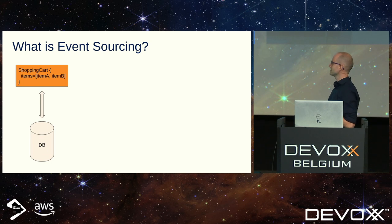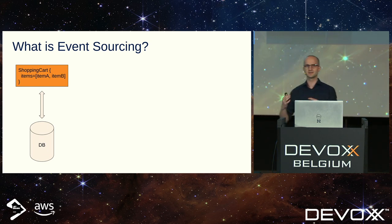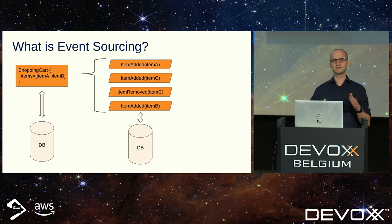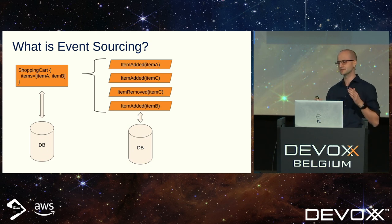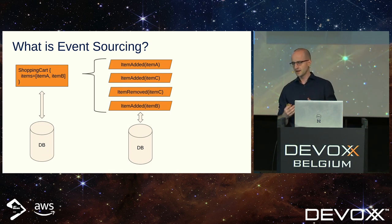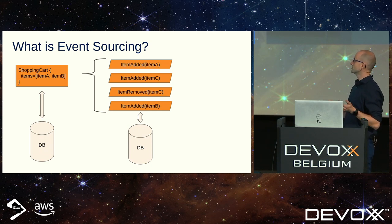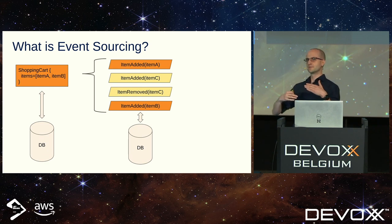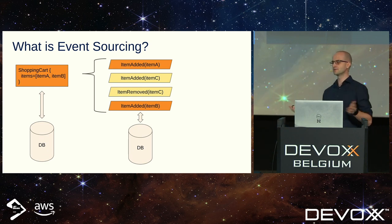In classic systems we save our state aggregates to the database as the most current state, and in case of some change we simply overwrite this state. In event sourcing, state in the database doesn't exist anymore — you can save a snapshot as a performance optimization, but it's totally optional. What you are saving and what is your source of truth are events, and when you replay events from your event store you get exactly the same state — a shopping cart with item A and B. But with events you also get more information: item C was added and then removed from the order.